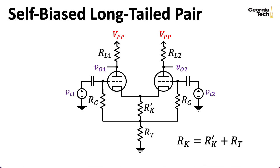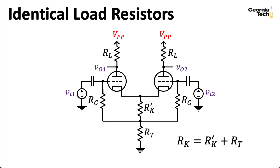So now instead of RL1 and RL2, I just have RL. Remember that RK' let us set the grid to cathode bias voltage, and RG, our grid leak resistances, which are usually the same, are much bigger than RK' and RT in practice. So as far as the small signal circuit goes, we don't really need to worry about RG.